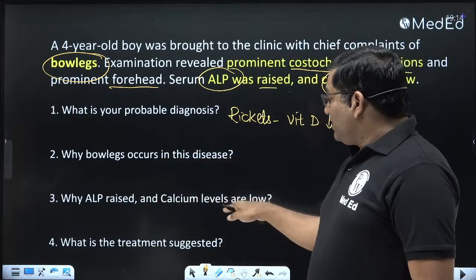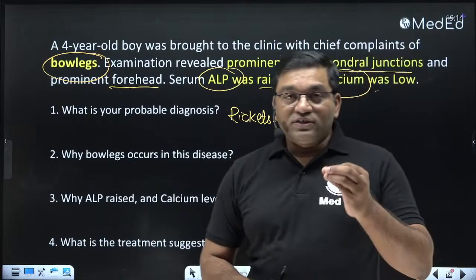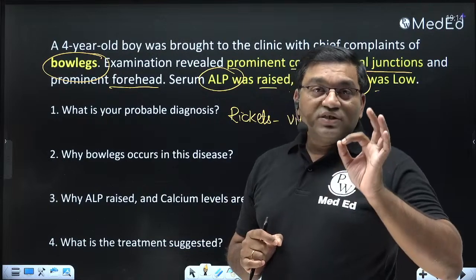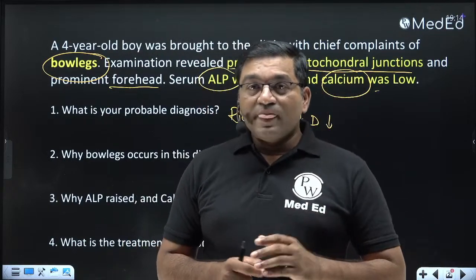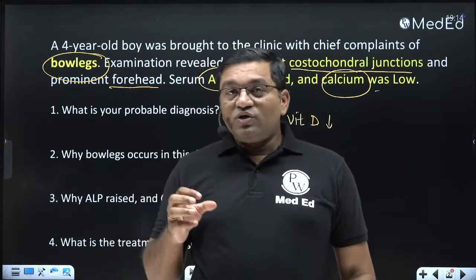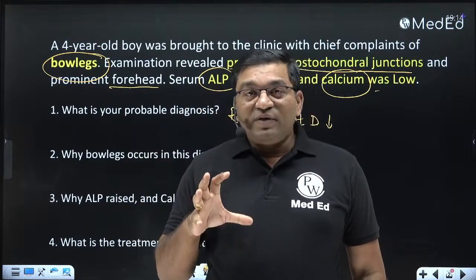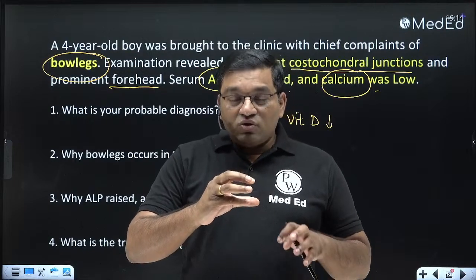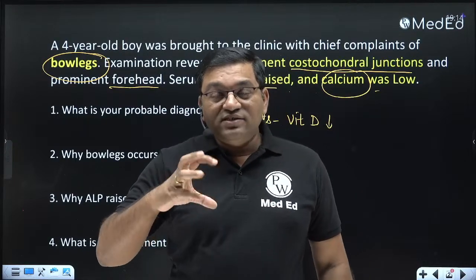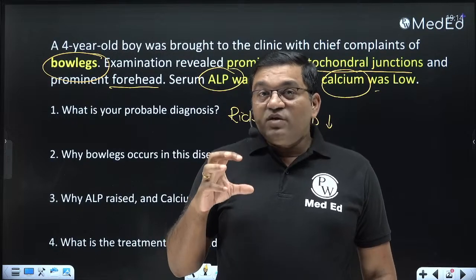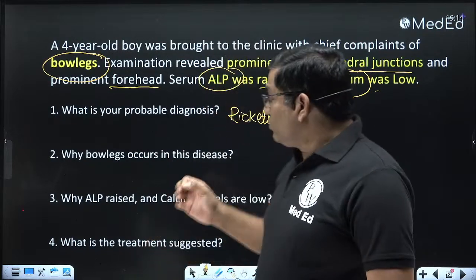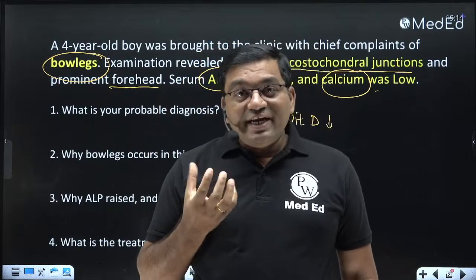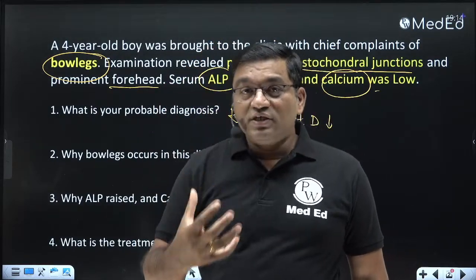Why do bow legs occur? The classical symptoms of vitamin D deficiency include: craniotabes — a ping-pong ball-like feel of the skull; wide open fontanel and delayed closure of the fontanel; and frontal bossing — a prominent forehead.